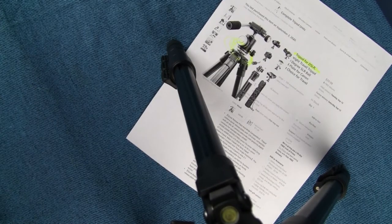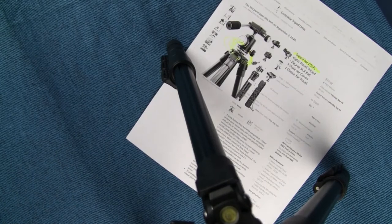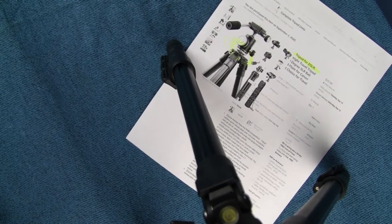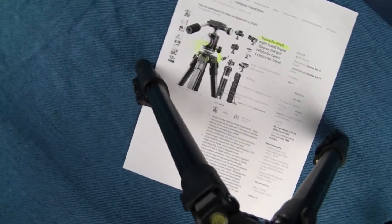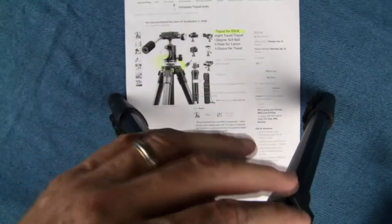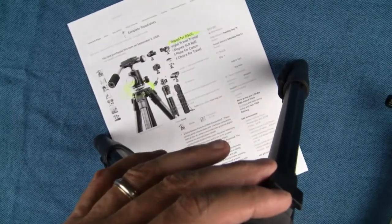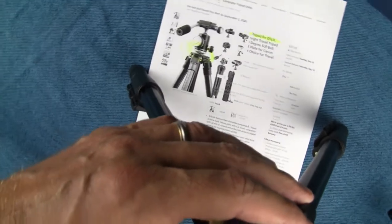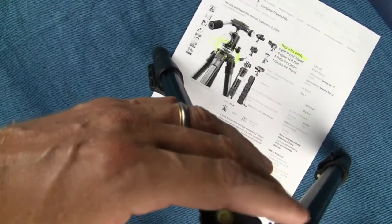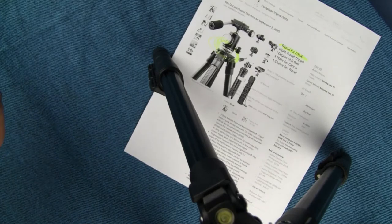Now because this thing has a ball and socket mount, you can point a camera straight down at the ground and look how smooth that spins. Very nice. No jerkiness. Oh boy, I really like this a lot. You can make this thing point straight up, straight down.